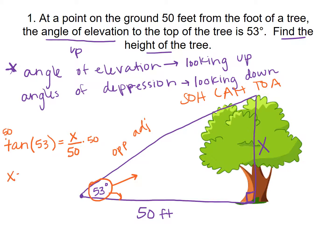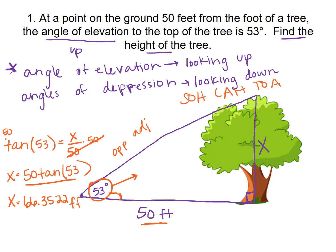To solve, I multiply both sides by 50, giving me x = 50 · tan(53), because the 50s cancel. I type that into my calculator exactly as I see it: 50 tan 53. You should get back 66.3522. Since these are real life examples we need a label, so the height of the tree is 66.352 feet. That's the first example of how trig helps us in the real world.